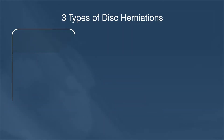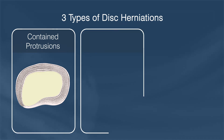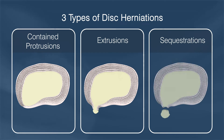Disc herniations can then be broken down into three different types. Number one is a contained protrusion, which are herniations still connected by an intact outer fiber of the annulus. Number two is an extrusion, which means the disc herniation is no longer contained by the last fibers of the annulus. Number three is sequestration, which means the disc herniation is no longer in contact with the rest of the disc and is its own island of disc material.